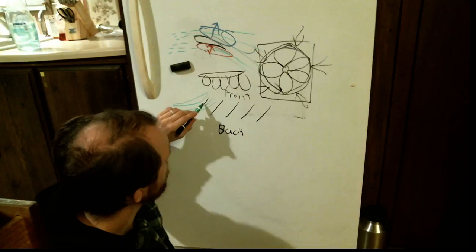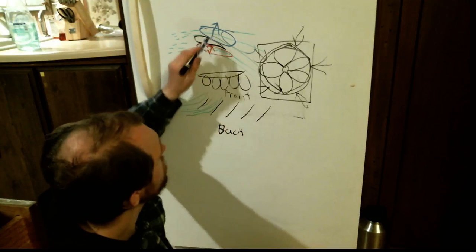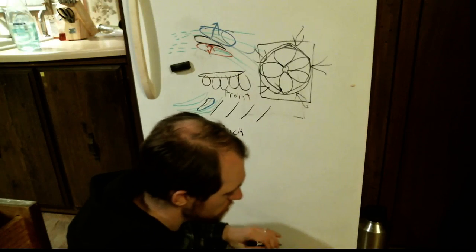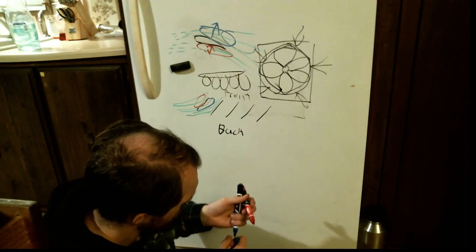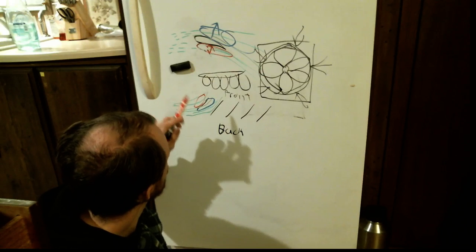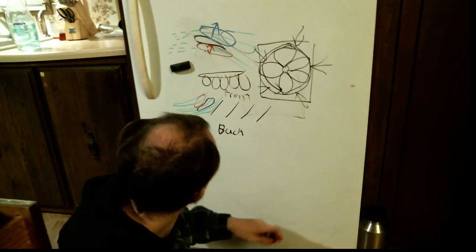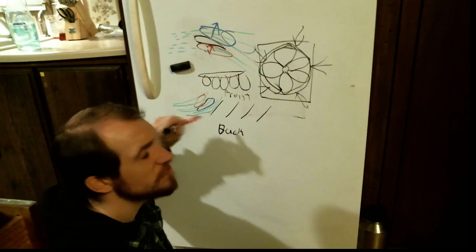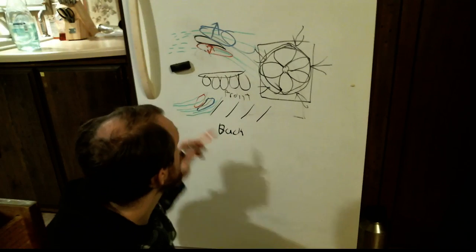It gets deflected by this fan blade, and before it runs into the next one it gets deflected that way. Similar to the airplane wing - but sort of in the other way - you see the same low pressure here and the same high pressure here. Because this is down from the fan it wants to go that way, and because this is up from the fan... actually it is correct. This is low pressure and it wants to pull the fan this way, and this is high pressure and it wants to push the fan that way, but the fan is fixed in place.